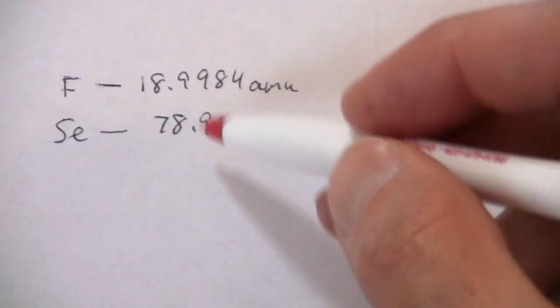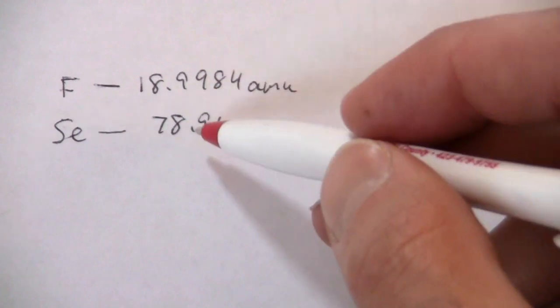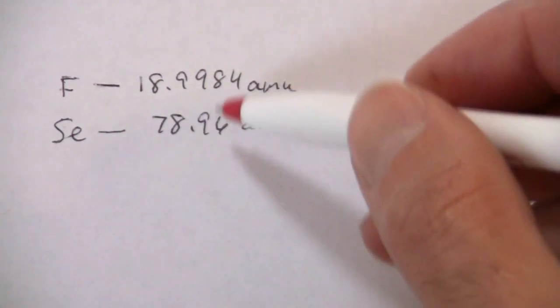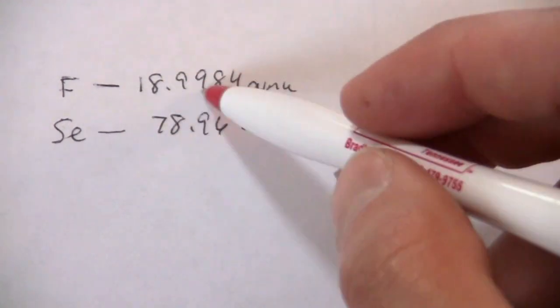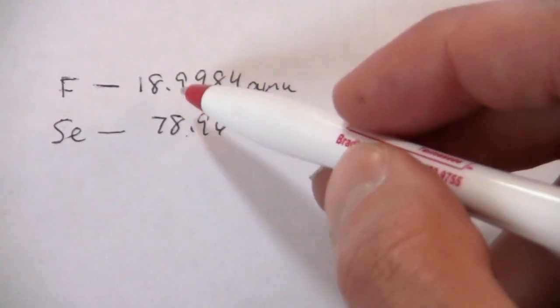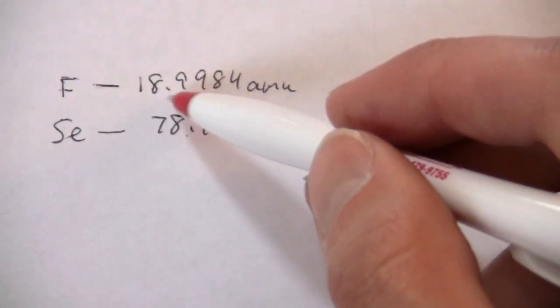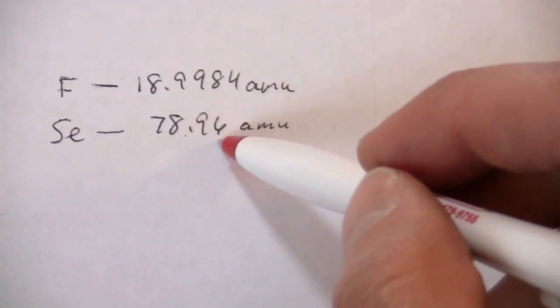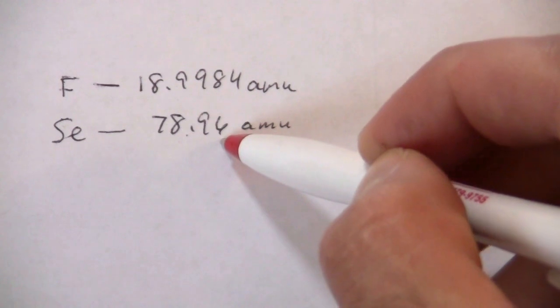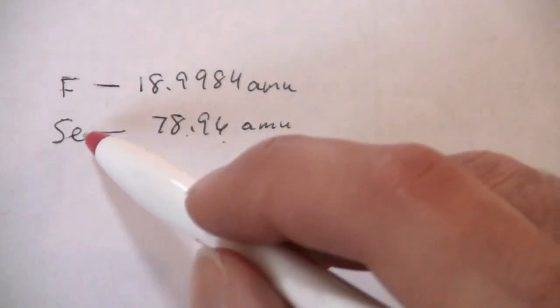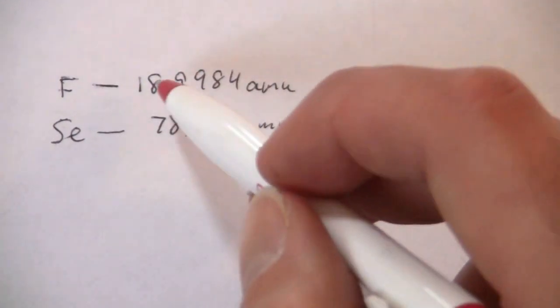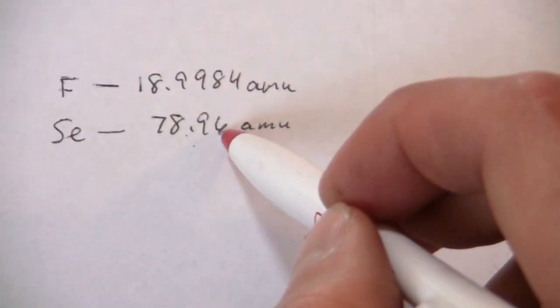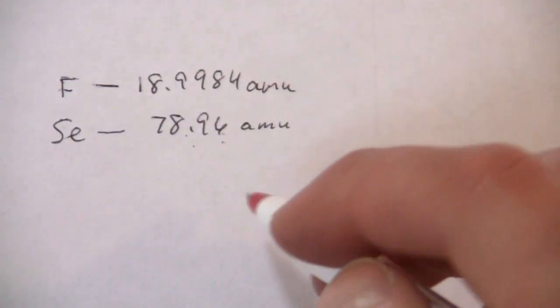Now it's saying that we have almost equal masses of these. So what we can do is say, how many times does fluorine, this 18 or 19, go into this 79? In other words, if I have equal masses, then I must have more fluorine atoms to balance out the 79 AMU for selenium.